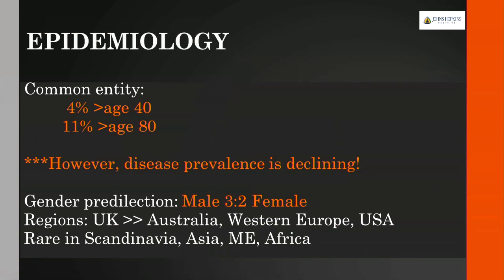Paget's disease is very common: 4% of people over the age of 40 are afflicted, and 11% over the age of 80, although disease prevalence is declining for unclear reasons. Males are slightly more commonly affected than females. Certain regions are more affected—the United Kingdom has a much higher percentage than Australia, Western Europe, and the United States. The disease is rare in Scandinavia, Asia, the Middle East, and Africa.